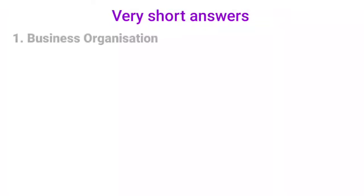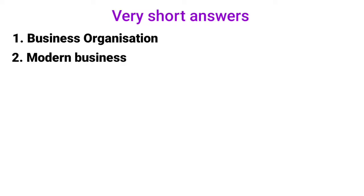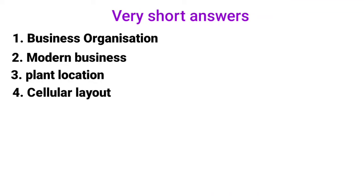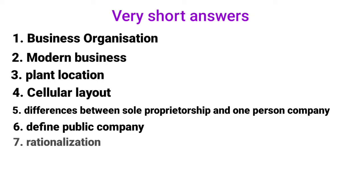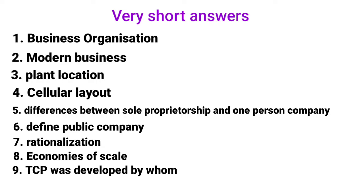Third section: very short answers. Questions include: define business organization; define modern business; what is plant location; define cellular layout; differences between sole proprietorship and one person company; define public company; what is meant by rationalization; define economies of scale; TCP was developed by whom; define internet. The concepts behind these have already been explained through the MCQs.